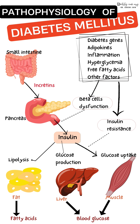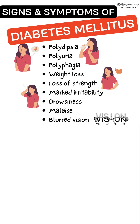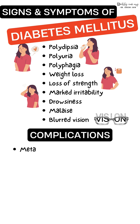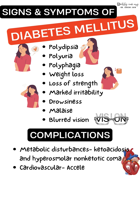The organ-level effects include enhanced lipolysis in fat cells, reduced glycogen synthesis in the liver, and enhanced protein catabolism in muscles. The classic signs and symptoms are the three P's: polydipsia, polyuria, and polyphagia.